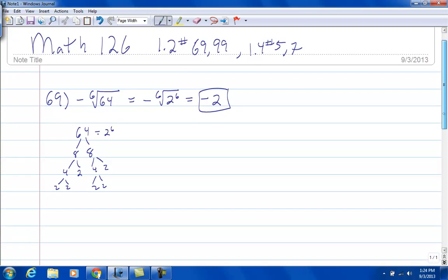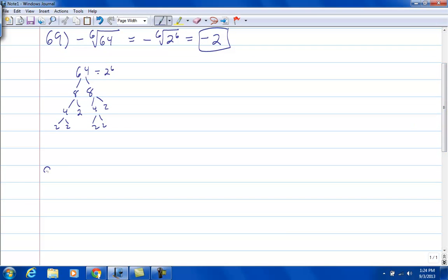Number 99. We have the cube root of the 4th root of x to the 36th. You have to multiply these indices,